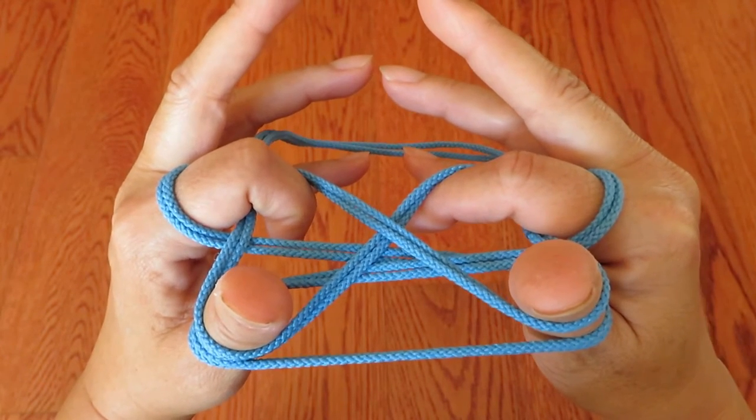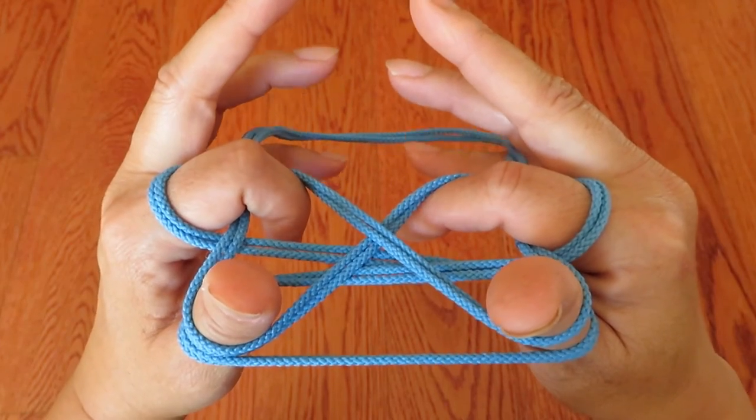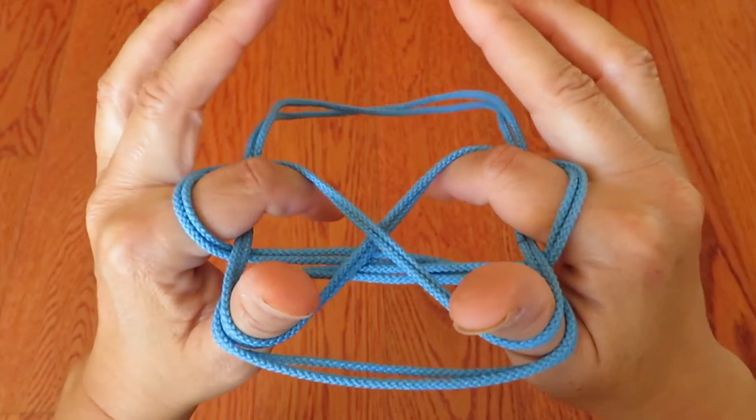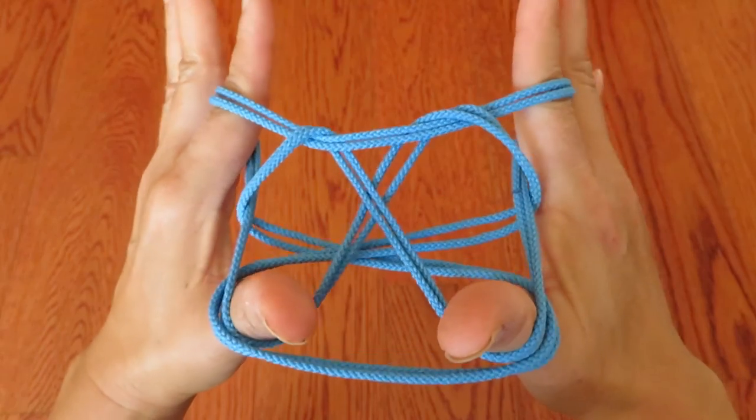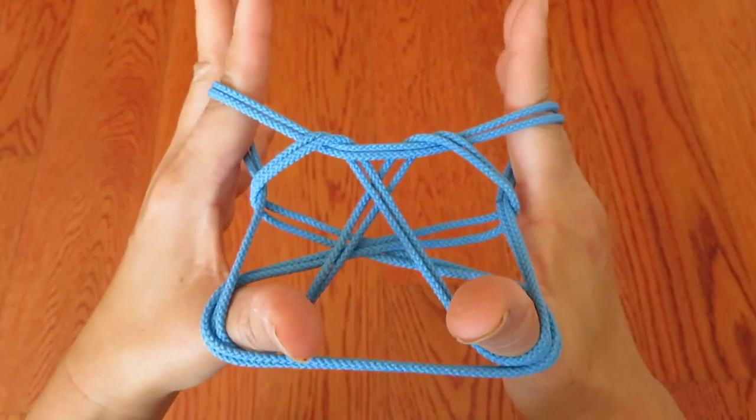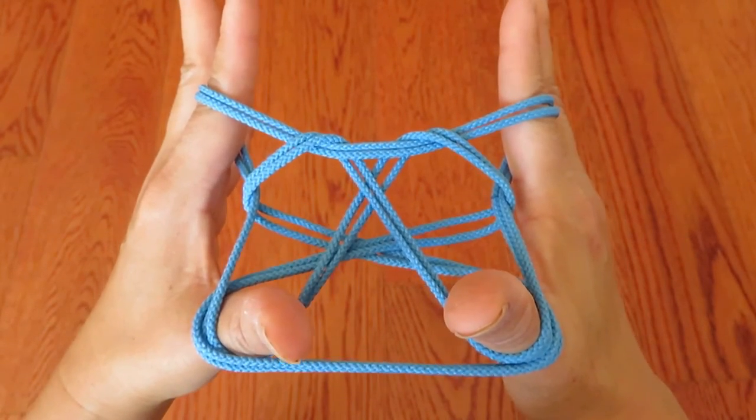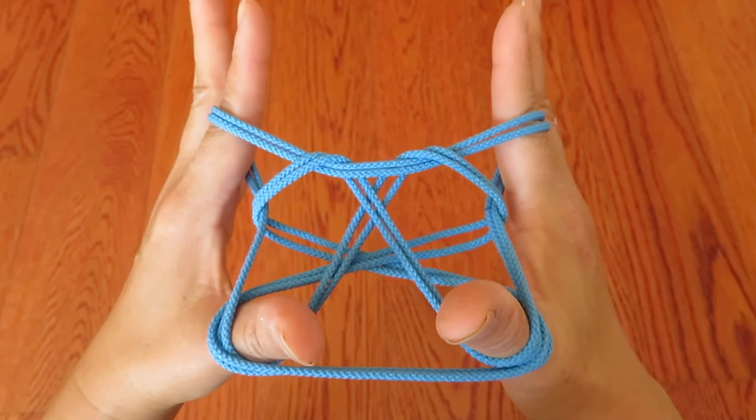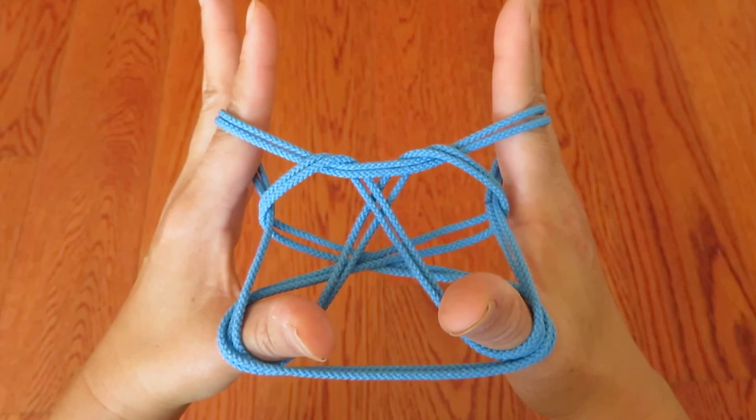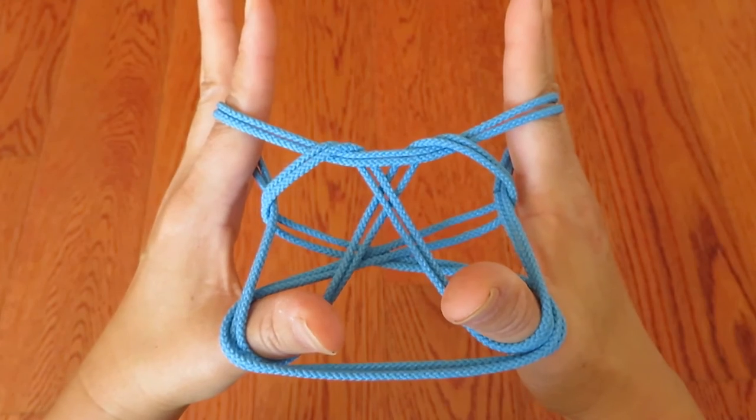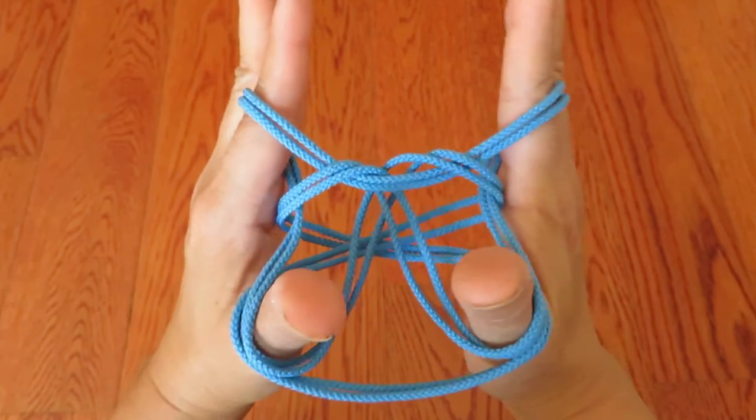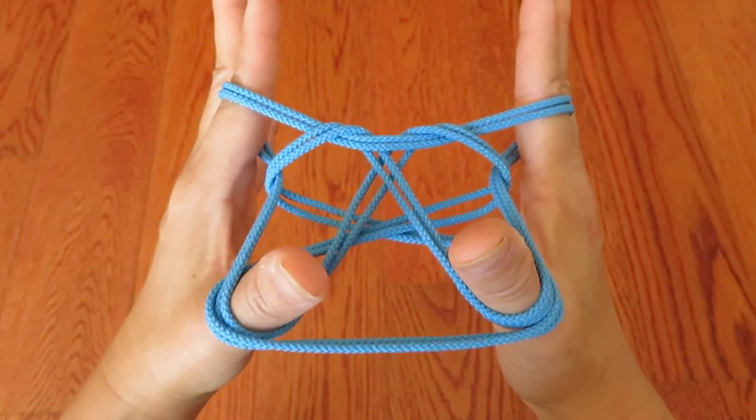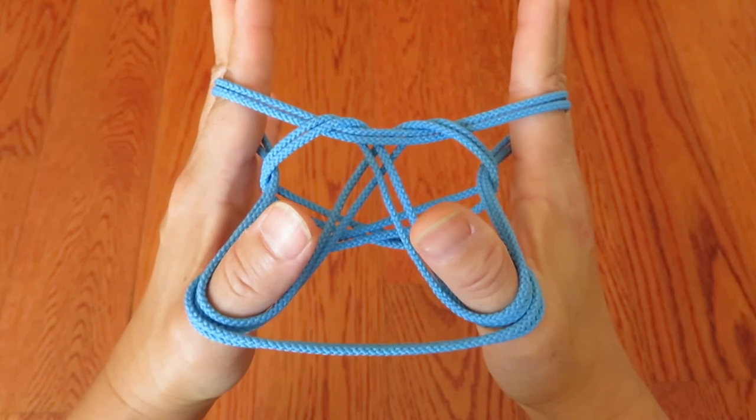And while keeping the strings with both pointers, stretch the pointers out like this. Now you can see the horizontal double strings in front of both thumbs, and keeping the top double strings of both thumbs, bring the thumbs under the horizontal double strings in front of the thumbs.